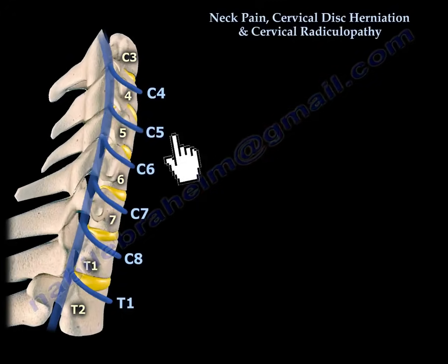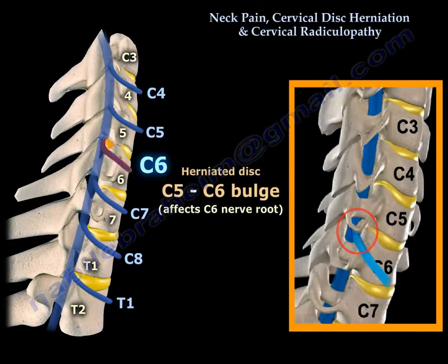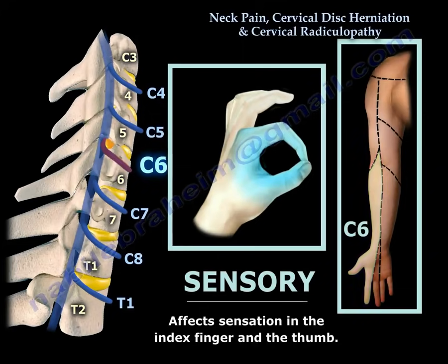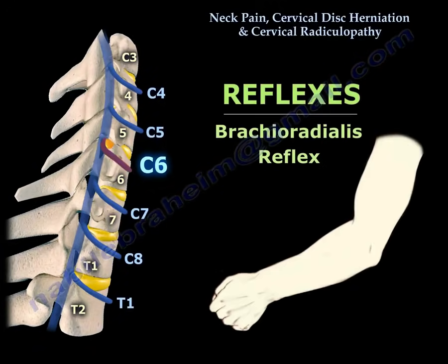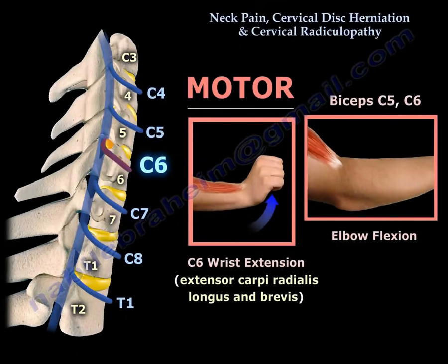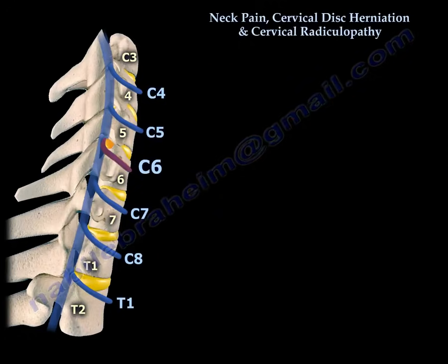A C5-C6 disc bulge or herniation will definitely affect the C6 nerve root. It will affect sensation at the index finger and thumb, as shown in the diagram. The reflex associated with C6 is the brachioradialis reflex. For motor function, C6 is responsible for wrist extension — the extensor carpi radialis longus and brevis — as well as elbow flexion, shared with C5.